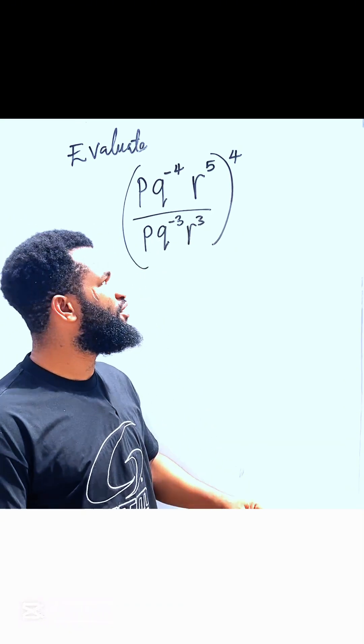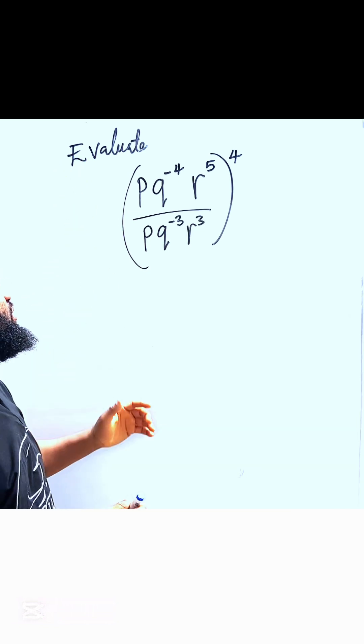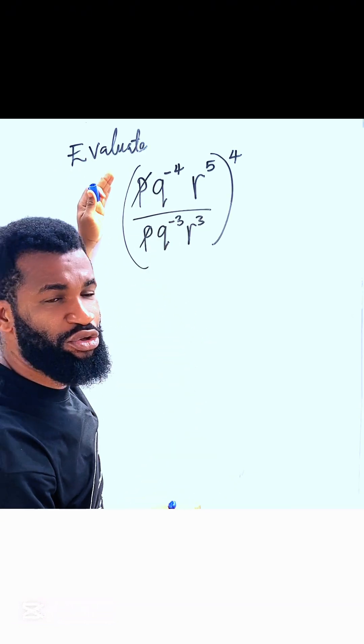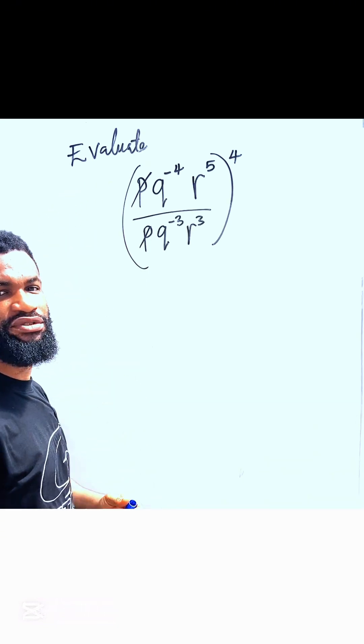Okay, welcome to Windows Academy. Let us simplify or evaluate this. So I'm going to cancel p will cancel p because one p is on the numerator, the other p is on the denominator, they will cancel.